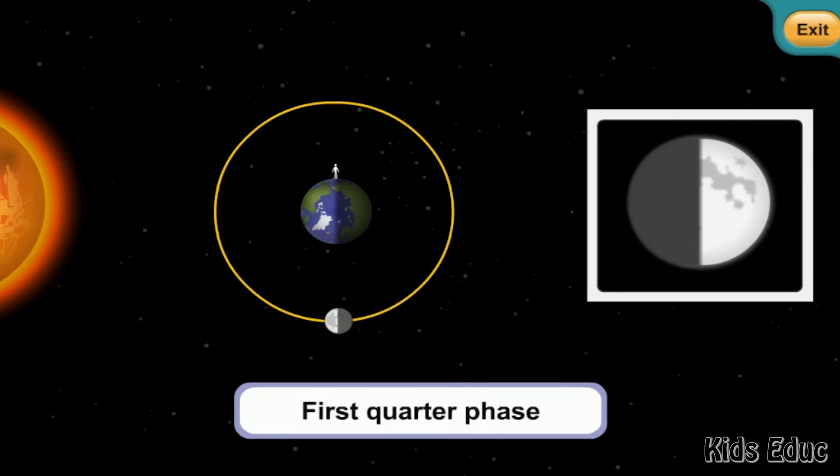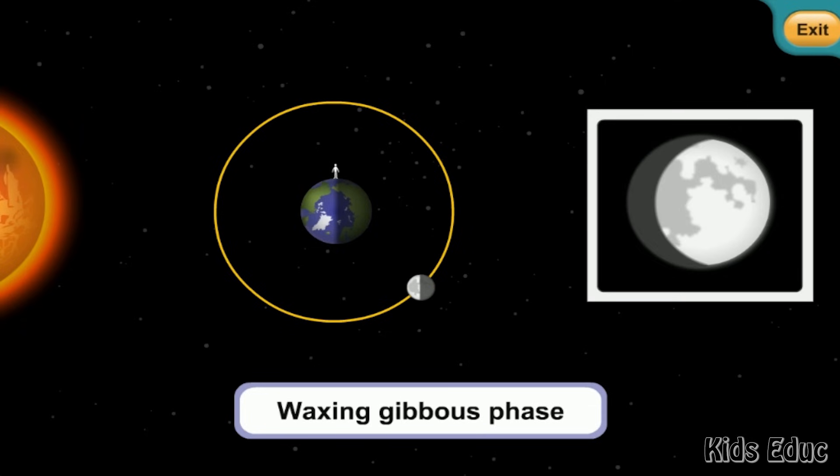In the first quarter phase, only one half of the moon is visible from the earth. This is because the right half of the moon appears lit, and the left side of the moon is still shadowed. In the waxing gibbous phase, more than half of the moon appears lit by the sun. When you see a waxing gibbous moon, you know that a full moon is just a few days away.